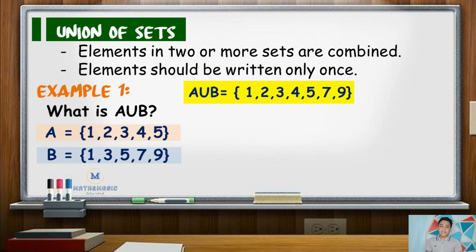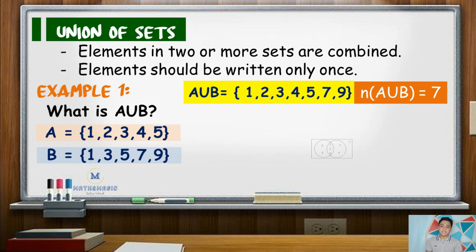Thus, A union B has the elements 1, 2, 3, 4, 5, 7, and 9. Its cardinality, or the number of elements, is 7. Illustrating the sets, it would look like this.